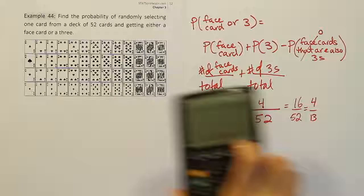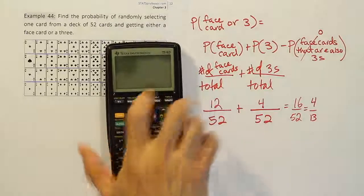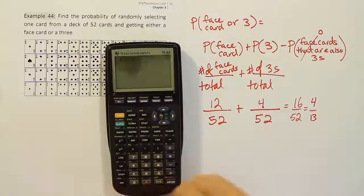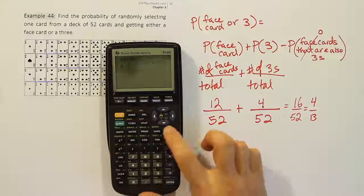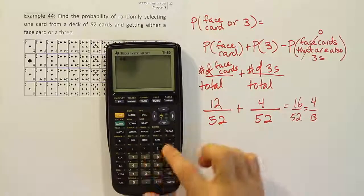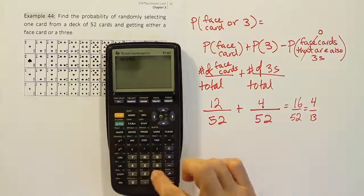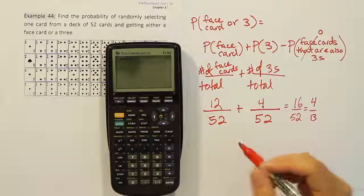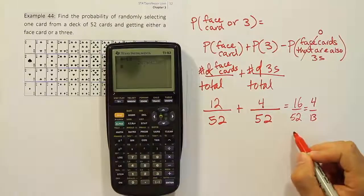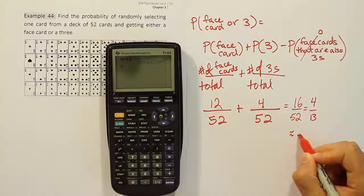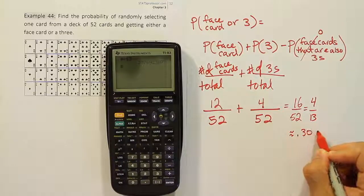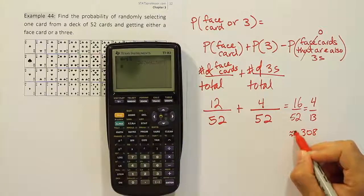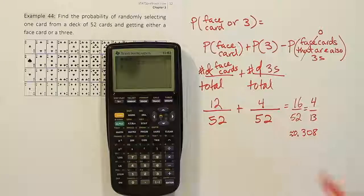That's a reduced fraction — four goes into both 16 and 52, giving us 4 over 13 as our answer. If you wanted to express that as a decimal, four divided by 13 gives approximately 0.308, or in other words, 30.8%.